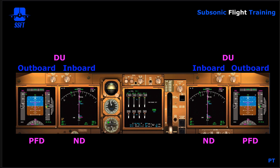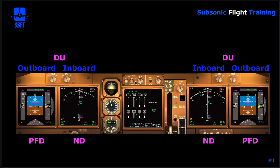Here's a view of the forward instrument panel where you can see the relationship between the captain's flight instrument system and the first officer's flight instrument system. Again, each pilot has an outboard and an inboard DU, and normally the PFD is on the outboard and the ND is on the inboard display unit.